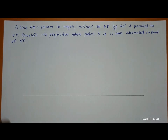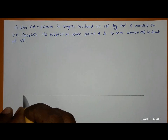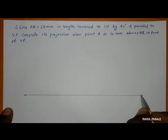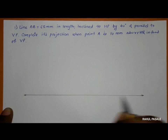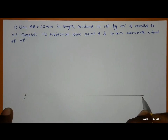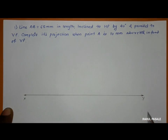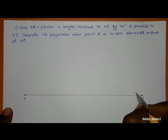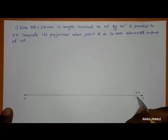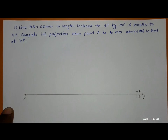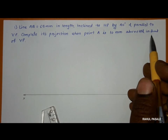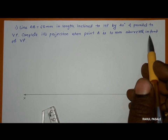As we use the first angle method, in the first angle method this is the XY line. Above the XY line there is the VP and below the XY line there is the HP. It is given that point A is 10 mm above HP and 10 mm in front of VP.